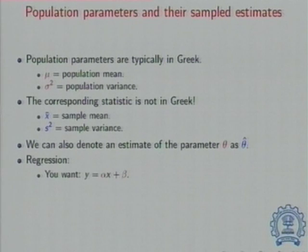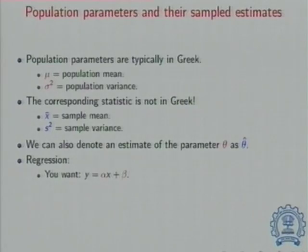Therefore, beta should be 0 — there is no offset. As I increase X, Y will increase proportionately, and that alpha is some kind of inherent constant based on which species we have put in our test tube. That is what Beer-Lambert's law says.